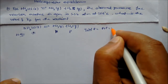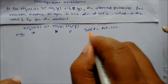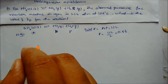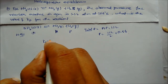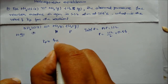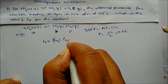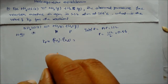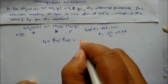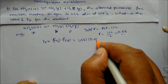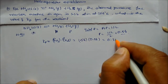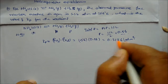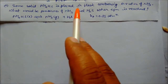The total pressure is P plus P, which equals 1.12 atmosphere, so each partial pressure P is 1.12 divided by 2, giving 0.56 atm. Therefore Kp equals the partial pressure of ammonia multiplied by the partial pressure of H2S, which is 0.56 × 0.56 = 0.3136 atmosphere squared.